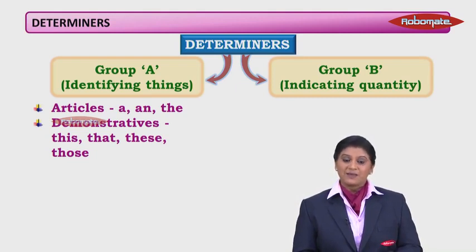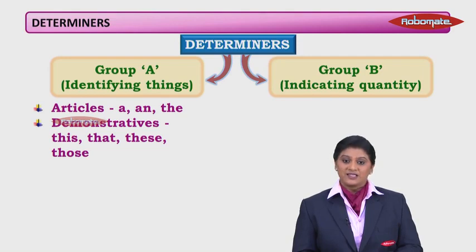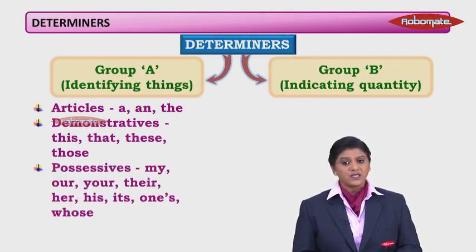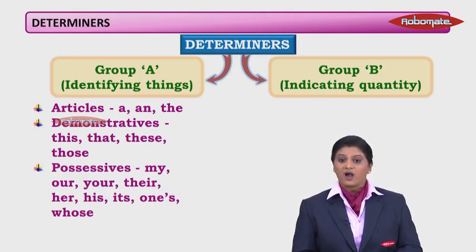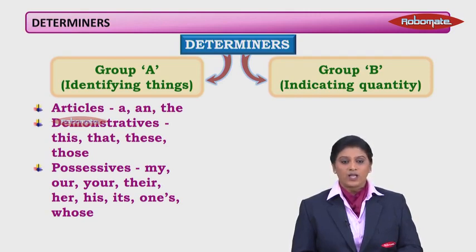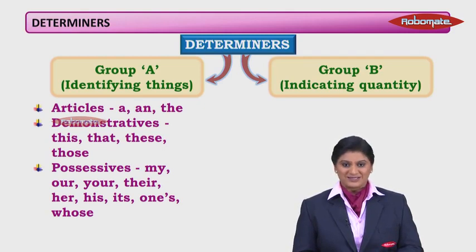For example, 'this house belongs to me' — 'this' in this sentence becomes a determiner. Similarly, possessives like my, our, your, their, her, his, its, one's, whose — these are all group A determiners.